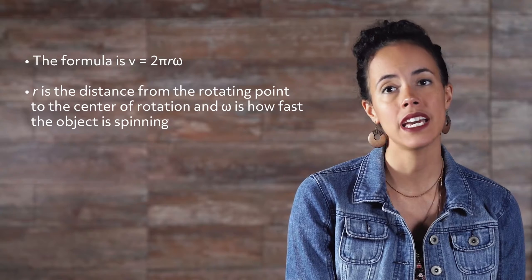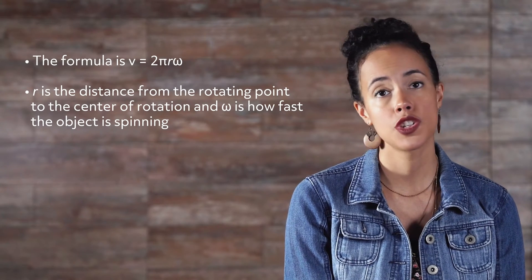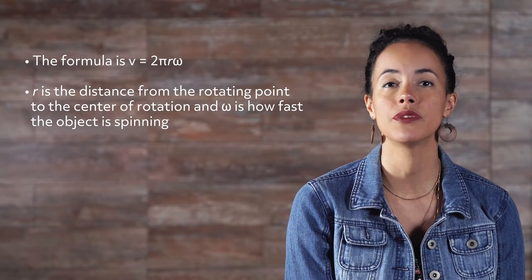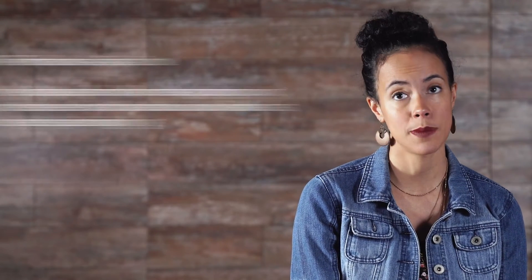In general, the formula is v equals 2 pi r omega, where r is the distance from the rotating point to the center of rotation and omega is how fast the object is spinning.